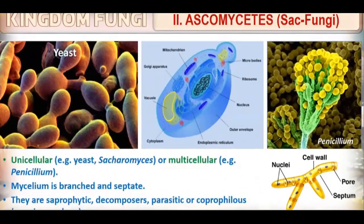Ascomycetes may be unicellular — yeast (Saccharomyces) is included — or multicellular, like Penicillium. The mycelium is septate and branched, which is opposite to Phycomycetes, which had aseptate and coenocytic mycelium.